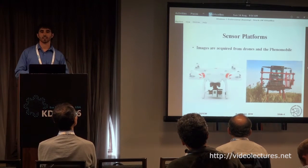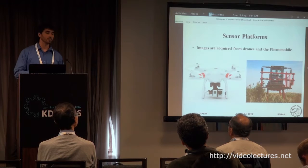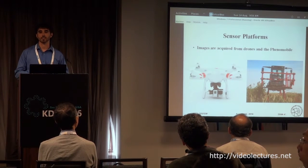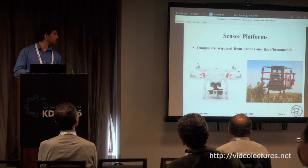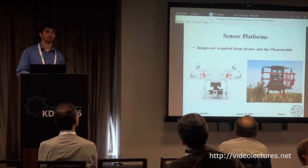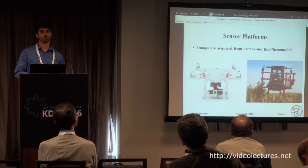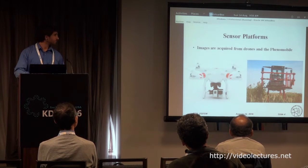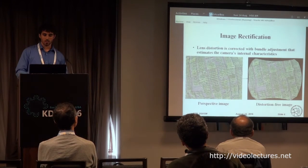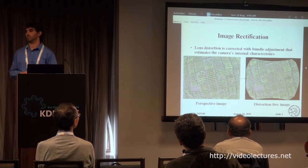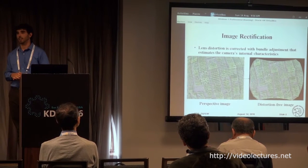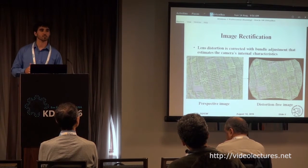We have a 10-acre field at Purdue University and that's where we acquire our image dataset. We use both a custom-made truck that we call the Phenomobile and we also use drones. We will focus in this paper on the drone imagery. One of the jobs of the photogrammetry group is to pre-process the thousands of images that we acquire from drones.